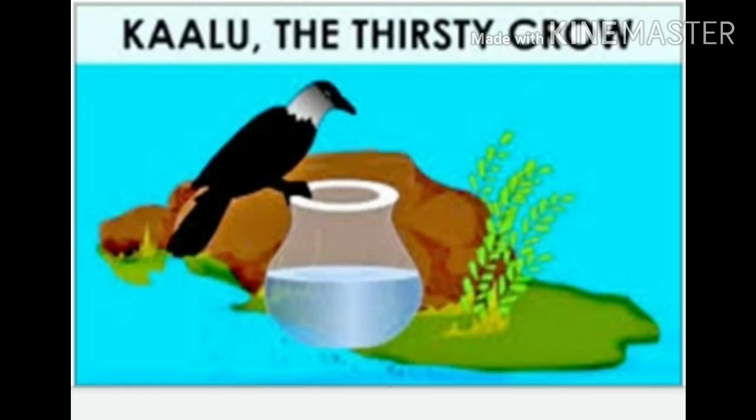Okay, aapki book mein ek chhoti si story hai — Kaalu, a thirsty crow ki. Bahut sare bachcho ko pata bhi hogi, par chalo isko ek baar phir se dekhte hain. Toh ek crow tha, kauwa, kala kauwa. Hum use naam dete hain Kaalu. Toh yeh story hai Kaalu naam ke ek thirsty crow ki. Thirsty means pyaasa. Ek pyaase kauwe ki story hai Kaalu ki, jo bahut zyada pyaasa tha.